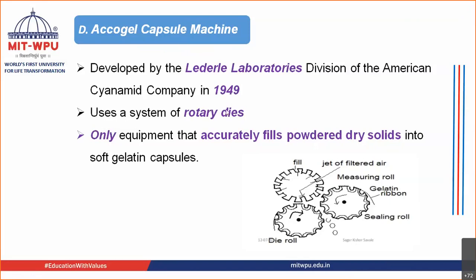The further post-filling steps remain the same across all four methods: naphtha wash, drying, sizing, inspection, and packaging. Only the filling step differs depending on which machine is used. These are the four machines used in the production and manufacturing of soft gelatin capsules.